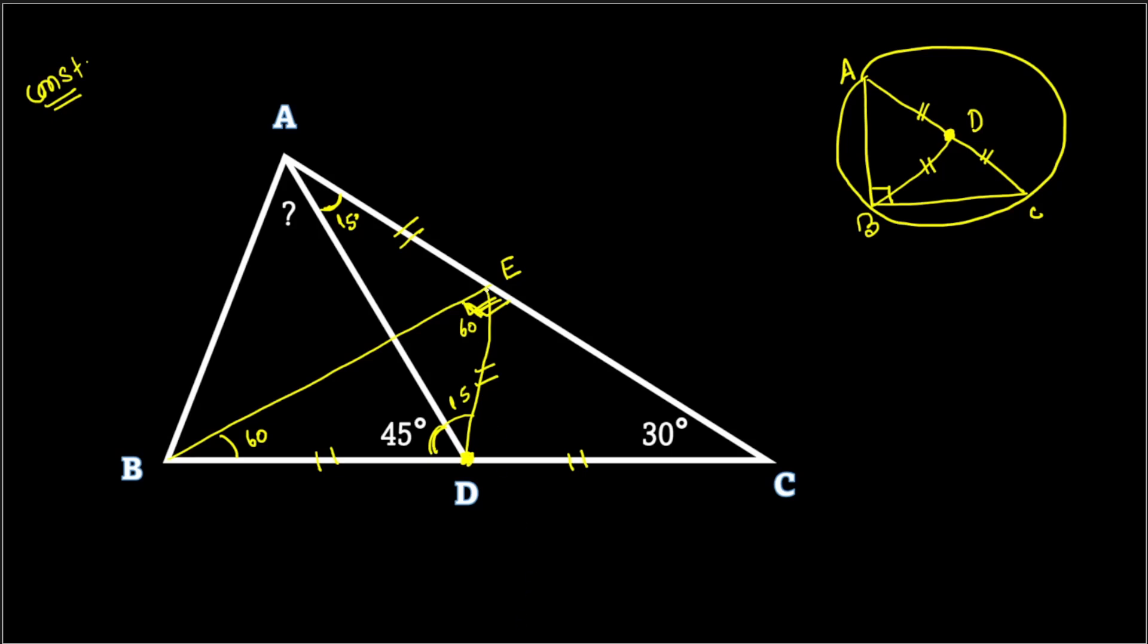From point E we know we have EA equals ED equals EB. From a single point, if three lines are equal, then this point is the center and the other points are on the perimeter of the circle. We can draw a circle with center E passing through A, B, D. BD at the center creates angle 60 degrees, then BD at A creates angle 30 degrees. This is our answer.